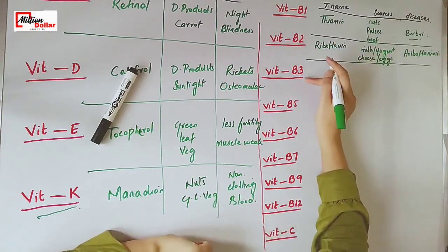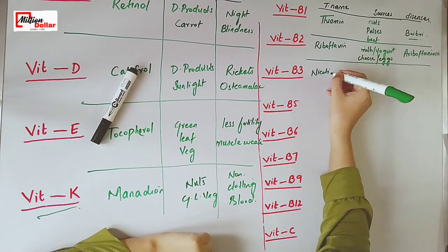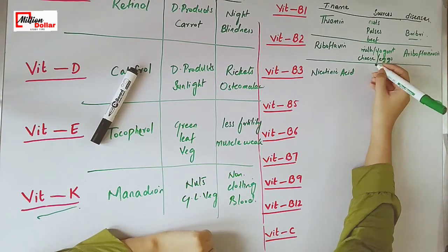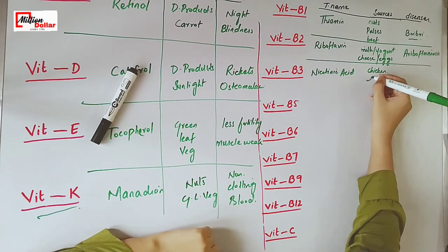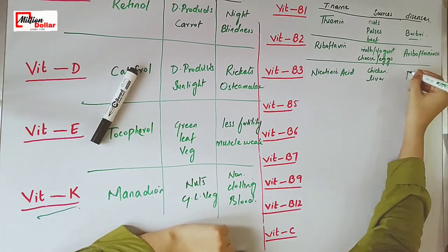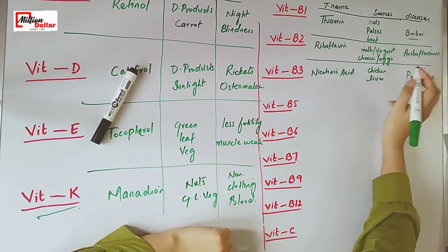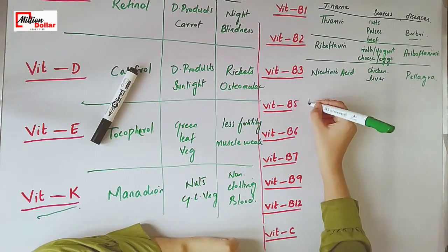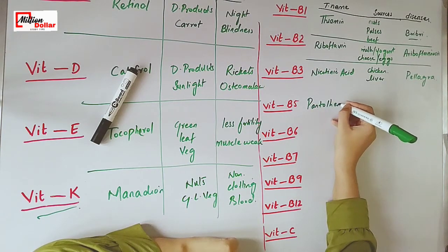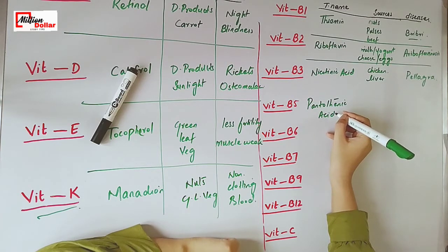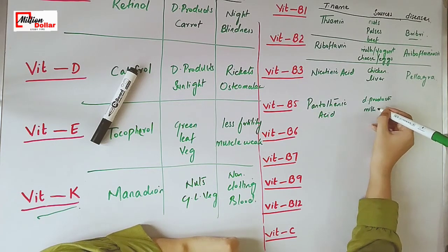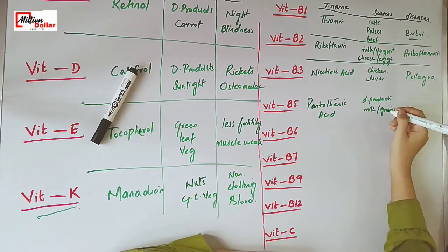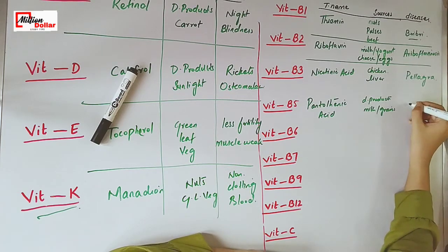The technical name of vitamin B3 is nicotinic acid. The sources of vitamin B3 are chicken breast and liver. Pellagra is a disease caused by the deficiency of vitamin B3. The technical name of vitamin B5 is pantothenic acid. The sources are dairy products, milk, grains, and fish. The disease caused by the deficiency of vitamin B5 is paresthesia.